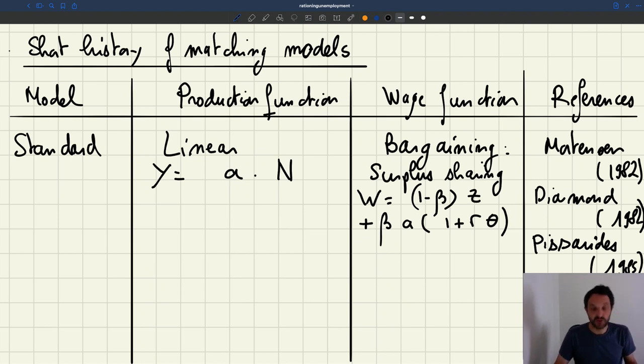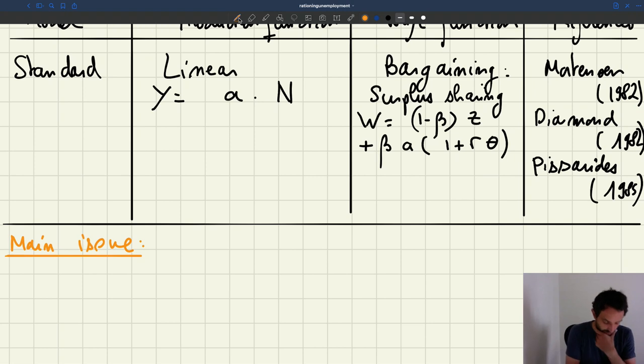Now, what's the issue with this model? Why has it evolved? Well, as we said, the problem is that in that model, when you have fluctuations in productivity, they generate fluctuations in labor market tightness, unemployment, vacancies that are way too small compared to what we see in the data. The main issue is that fluctuations in productivity do not deliver sufficient fluctuations in unemployment, vacancies, and tightness.